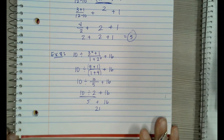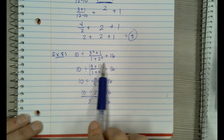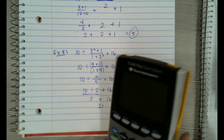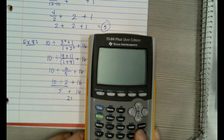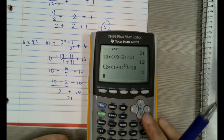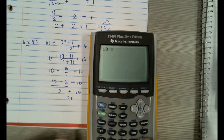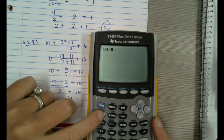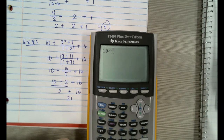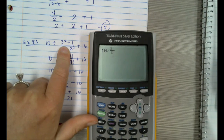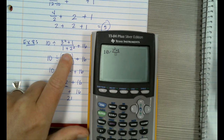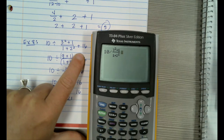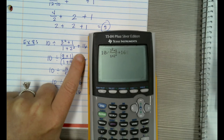You can type this whole thing in the calculator just like it looks. Type 10, then the division sign, then use alpha y equals to enter the fraction: 3 squared plus 1 on top, 1 plus 2 squared on the bottom, then plus 16. It gives you 21.